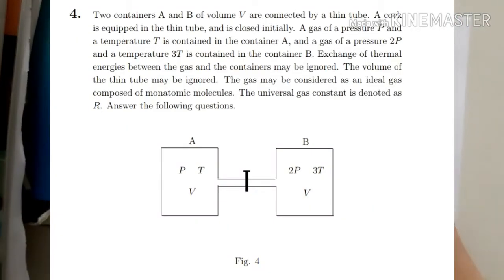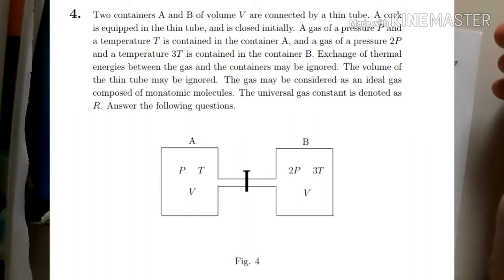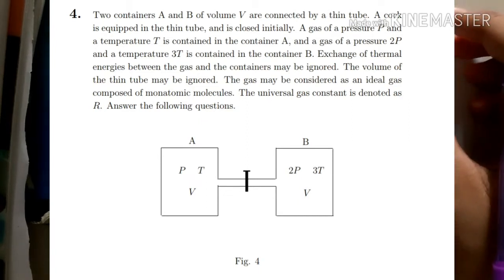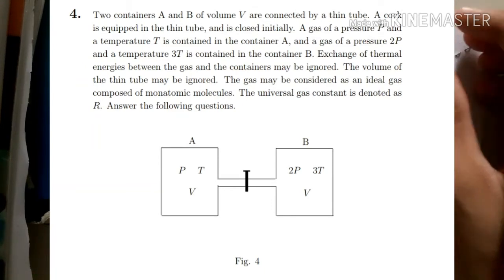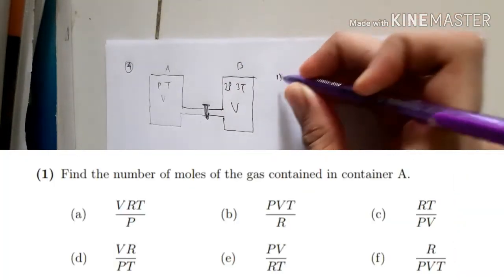Welcome to Memko Gaku Show, Physics Part 4. Continuing the discussion on number 4: two containers A and B of volume V are connected by a thin tube equipped with a stopcock, which is initially closed. Container A holds gas at pressure P and temperature T; container B holds gas at pressure 2P and temperature 3T. Thermal energy exchange between gas and containers is ignored, tube volume is ignored, and the gas is an ideal monatomic gas with universal gas constant R.